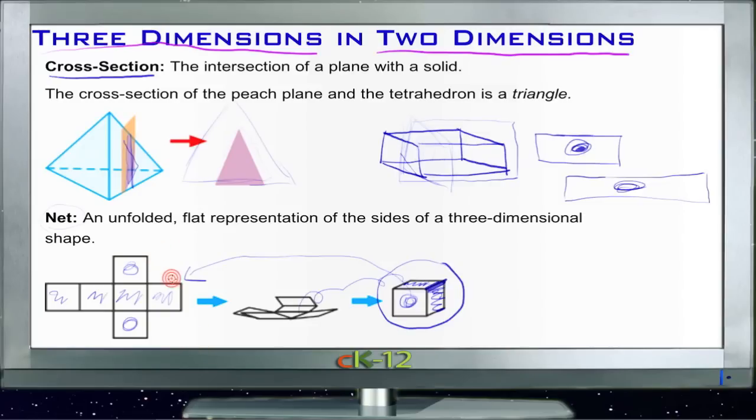There commonly is not a specific way you have to draw a net. It just has to show each of the faces of your three-dimensional figure in such a way that it could be folded up along the dividing lines between your shapes to get your figure. And the reason I pointed out that it doesn't have to be a specific way is that, for instance, this cube right here could also be drawn as,